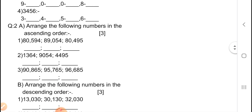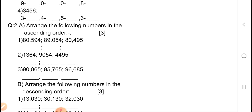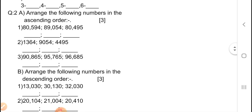Question number 2, A — arrange the following numbers in ascending order, marks is 3. First one: 80,594 / 89,054 / 80,495. Second one: 1,364 / 90,054 / 4,495. Third one: 90,865 / 95,765 / 96,685.